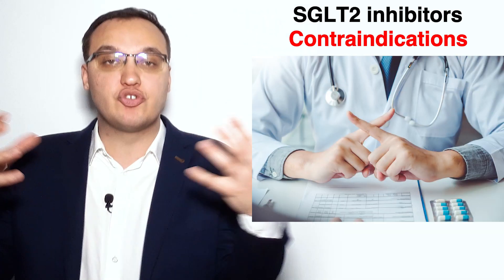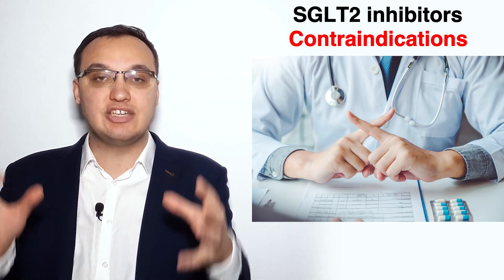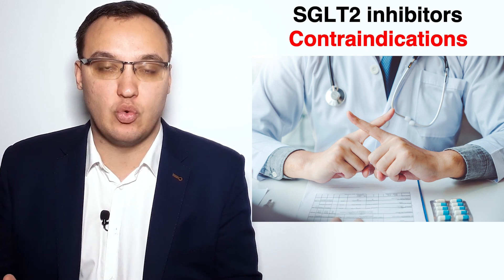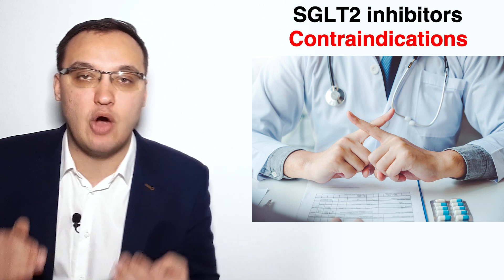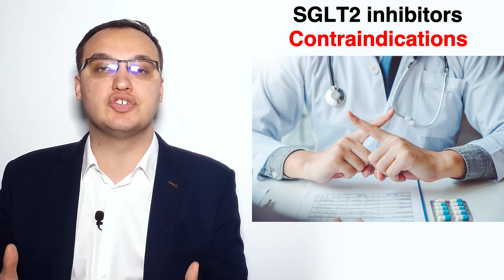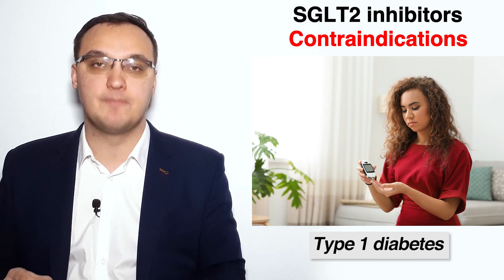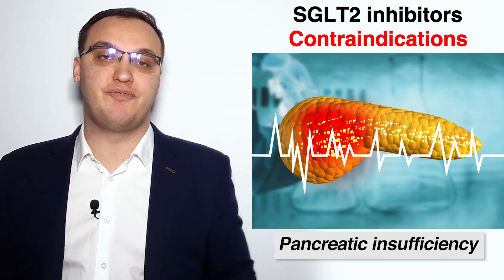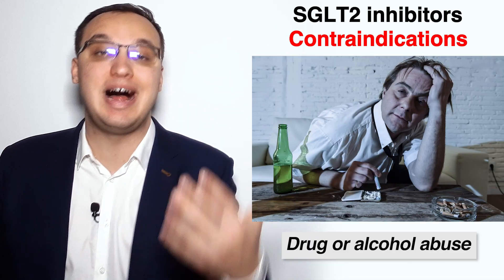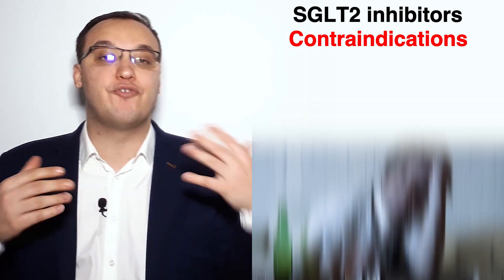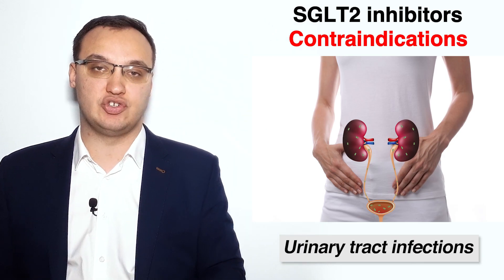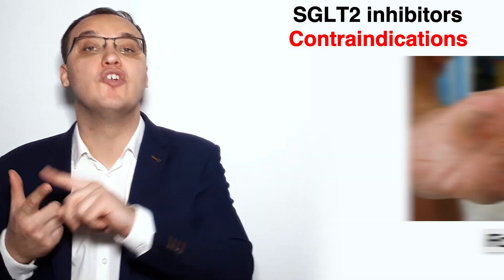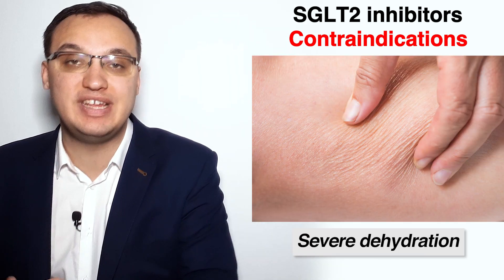Other contraindications are cases where we are not allowed to start medication. We are not allowed to start SGLT2 inhibitors in patients with type 1 diabetes, or prior diabetic ketoacidosis, or predisposing factors like pancreatic insufficiency, or drug or alcohol abuse. Additionally, frequent bacterial urinary tract infections, low bone mineral density with high risk of fractures, foot ulcers, or severe dehydration are contraindications.